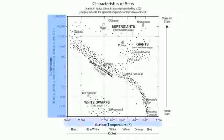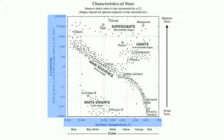Our horizontal axis has two scales. Temperature in degrees Kelvin is going to increase from right to left across the chart. So stars on the right-hand side tend to be very cool, and stars on the left-hand side tend to be very hot.